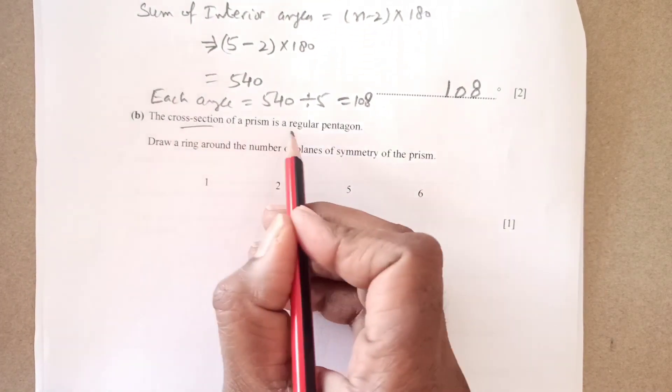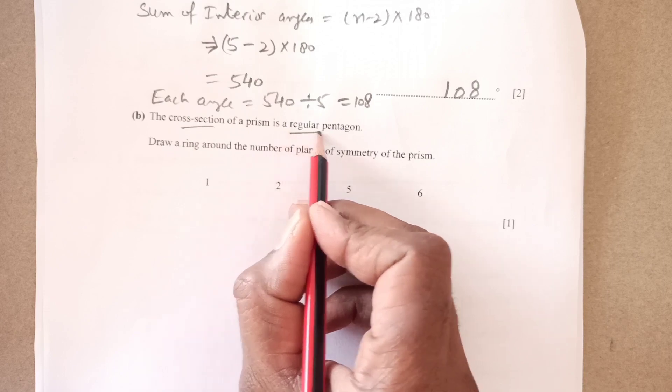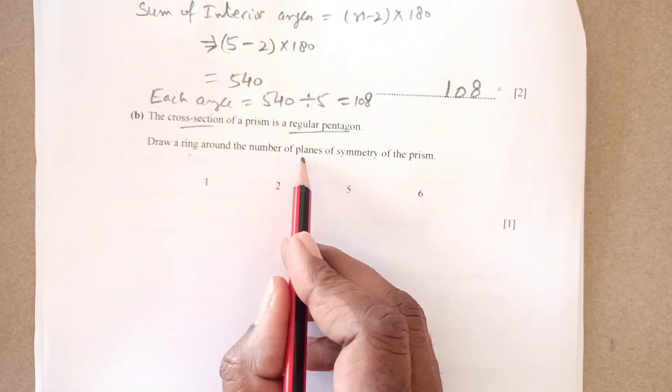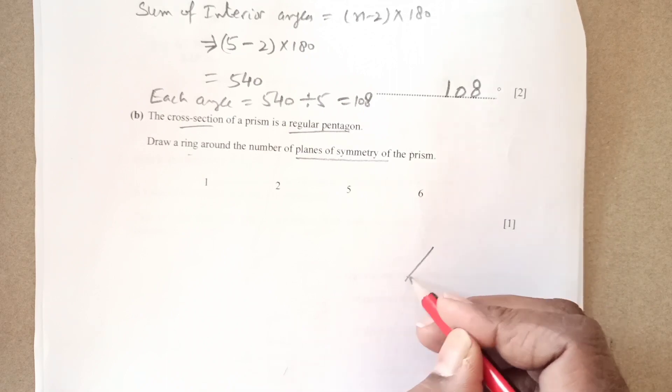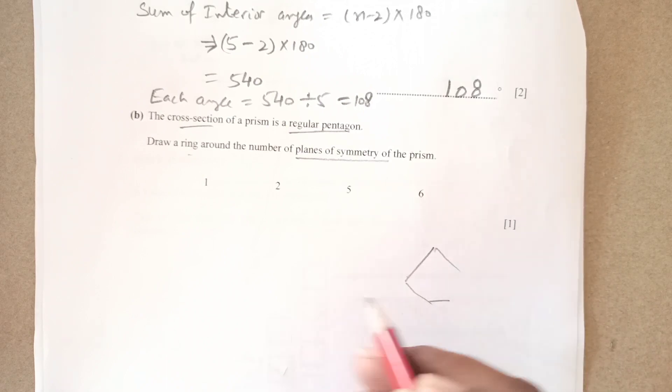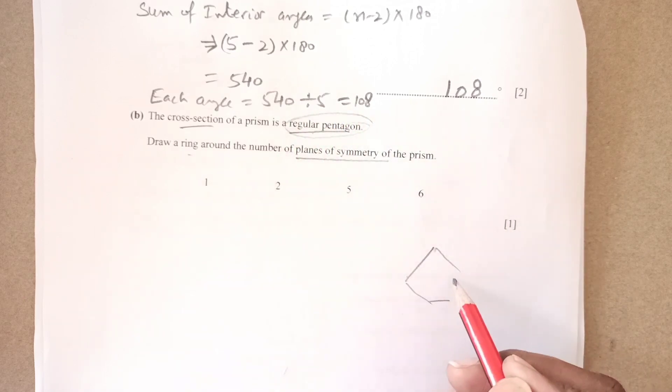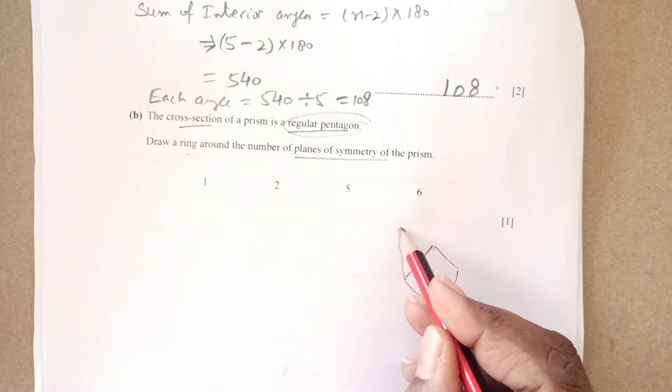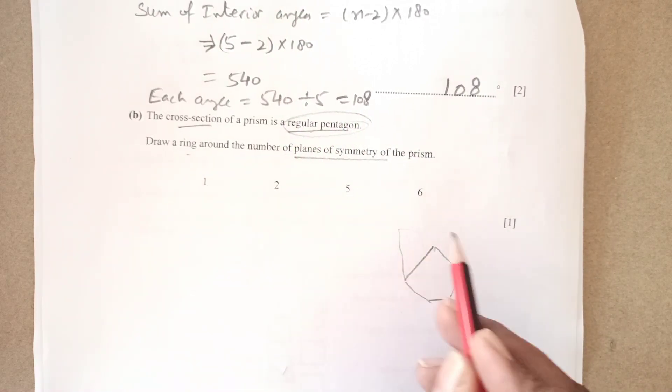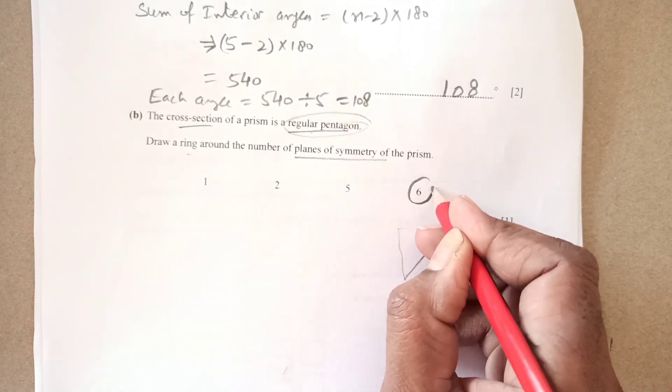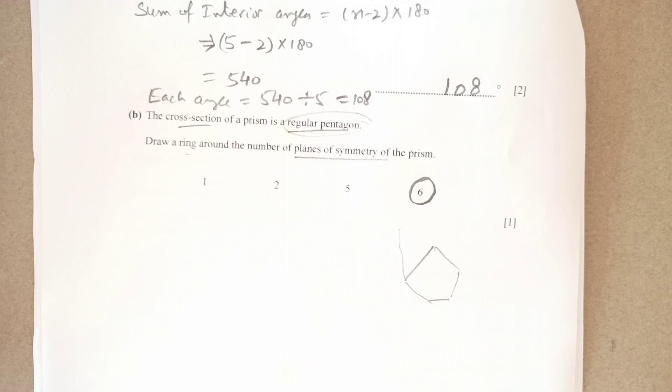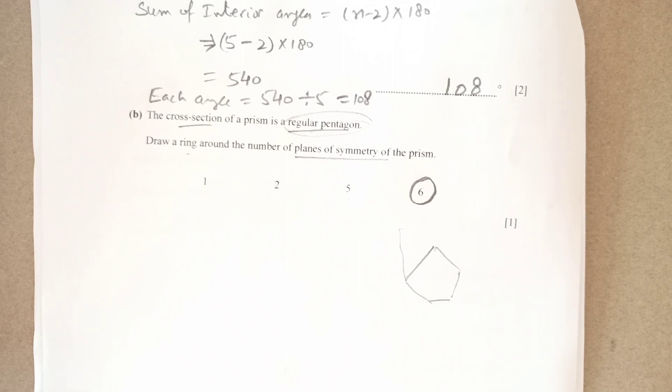Part B the cross section of a prism is a regular pentagon. Draw a ring around the number of plane symmetries of this prism. Prism is a regular pentagon. This is a pentagon and there will be like different side on this 5 sides all around plus this one. So 5 plus 1 there will be total 6 number of planes of symmetry right.